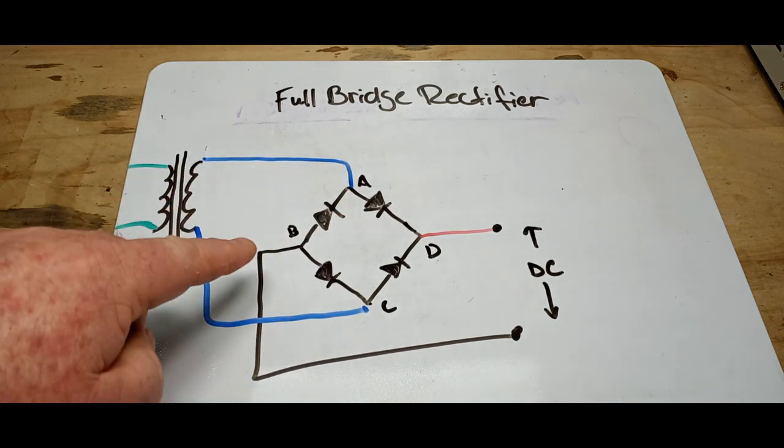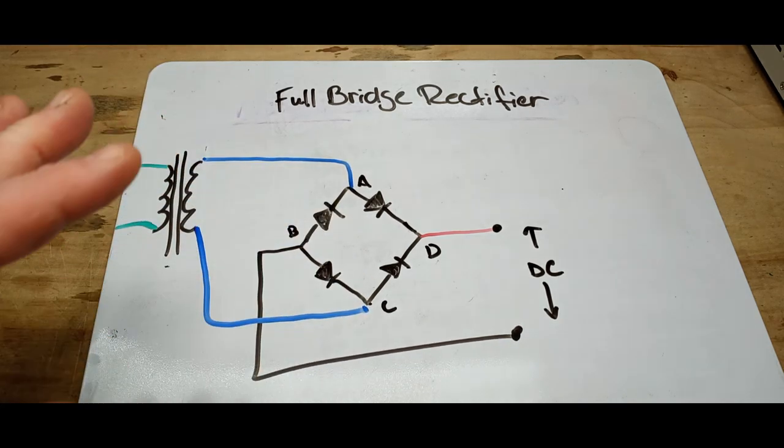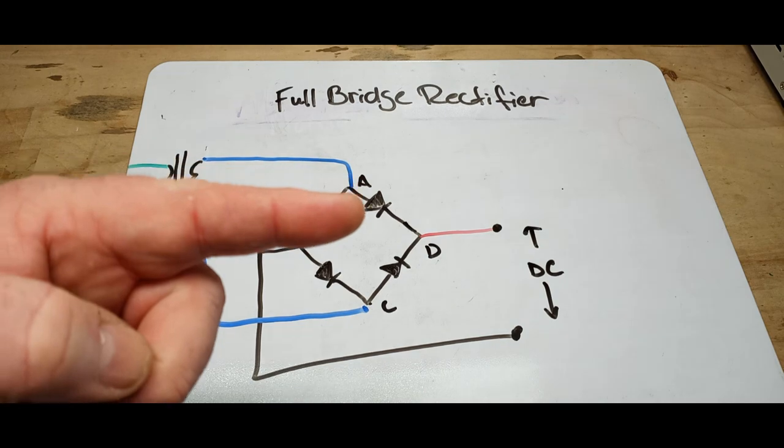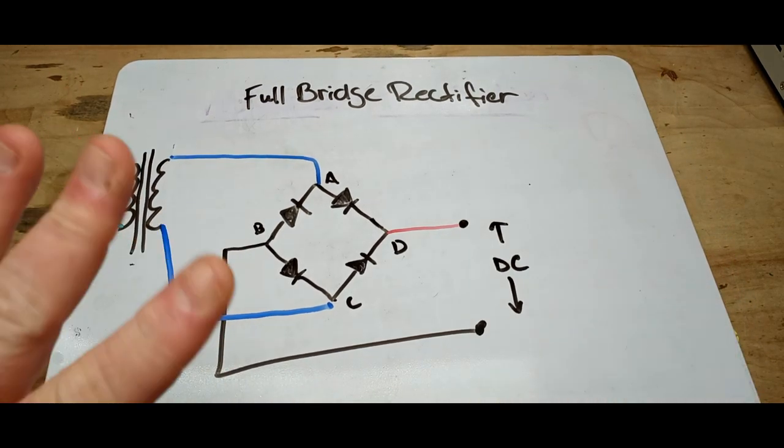What this bridge rectifier is doing is using diodes, which are kind of a one-way electronic valve to keep the current all flowing in the same direction. So it doesn't alternate, it's always the same. Just a quick overview. I've got other videos on it if you don't know what it is.